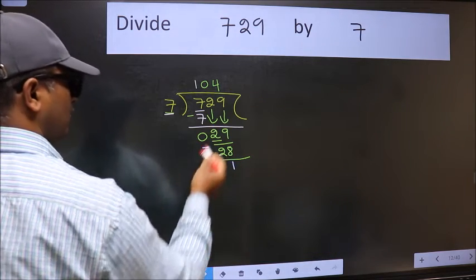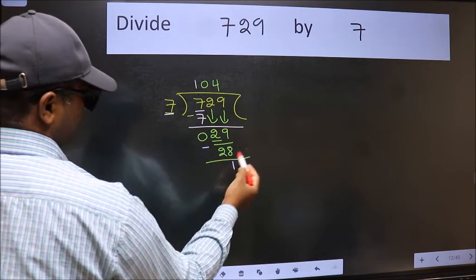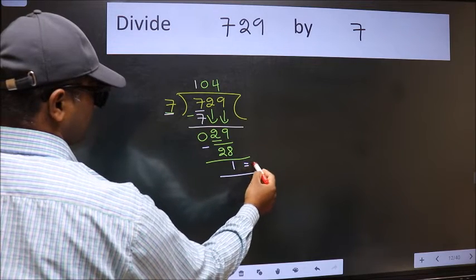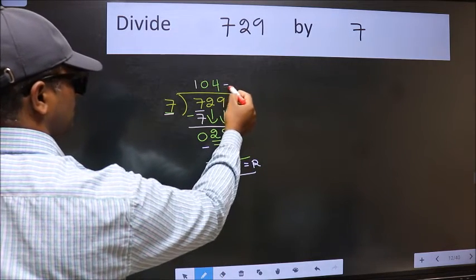No more numbers to bring down, so we stop here. This is our remainder and this is our quotient.